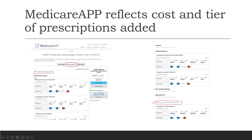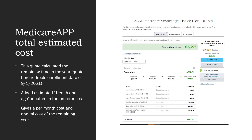It breaks down by categories: Tier 1 preferred generic, Tier 2 generic, Tier 3 preferred brand, Tier 4 non-preferred brand, and Tier 5 specialty — and tells you which drug falls in each category. For non-covered drugs, it also tells you how much the drug will cost during each phase, and it's going to be full price since it's not on the formulary.